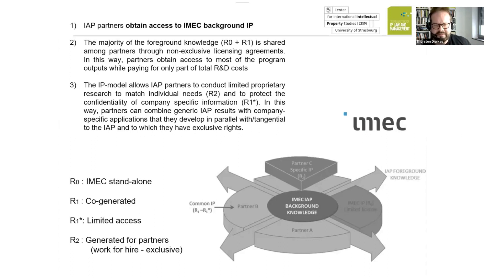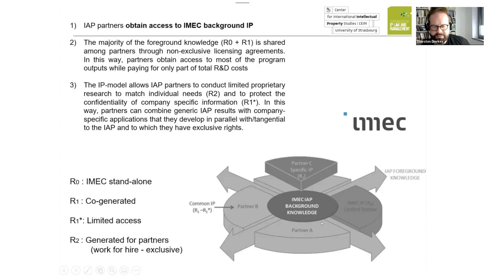And on top of that, there's even a third category, R2, which is generated for a specific partner — or where iMac works for a specific partner. In that case, it is only owned by this partner, and there's no access for other partners.